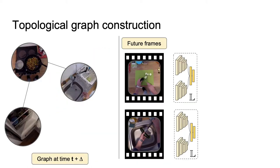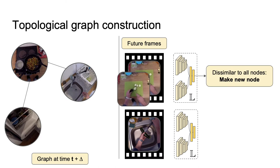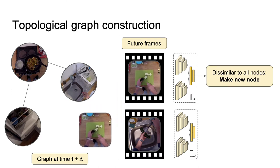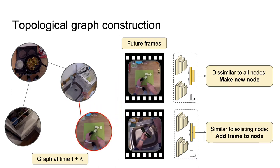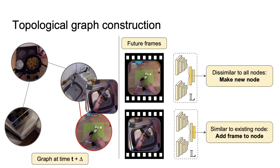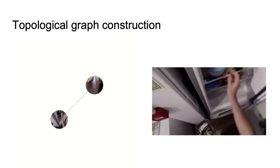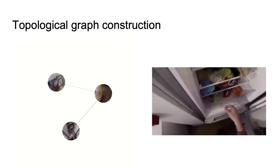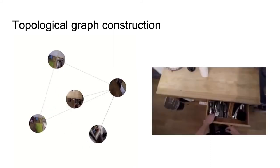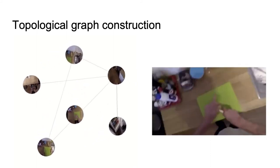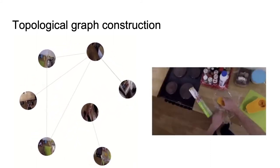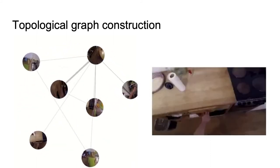Once trained, the network is used to sequentially assign a similarity score for each frame of an egocentric video with each node of the graph. If these scores are low, the frame represents a visit to a new, unseen zone, and if it's high, then the frame is merged with the previously visited node. Over time, a graph is constructed frame by frame for each egocentric video to capture zones of human interaction, and visits to each of these zones are catalogued.